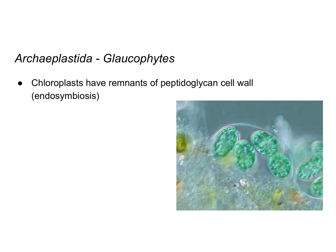Here's a picture of a glaukophyte. Glaukophytes have these chloroplasts — these green structures inside them. They also have remnants of a peptidoglycan cell wall, which is likely from the cyanobacterium that was engulfed during endosymbiosis.